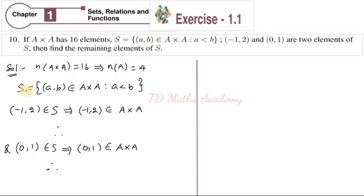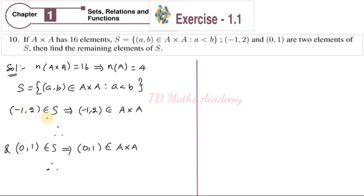Next, another set is given. Capital S is defined as the set of ordered pairs (a, b) such that (a, b) is an element of A cross A. The condition is satisfied with ordered pairs. Given that (-1, 2) is an element of S, and (0, 1) is an element of S.